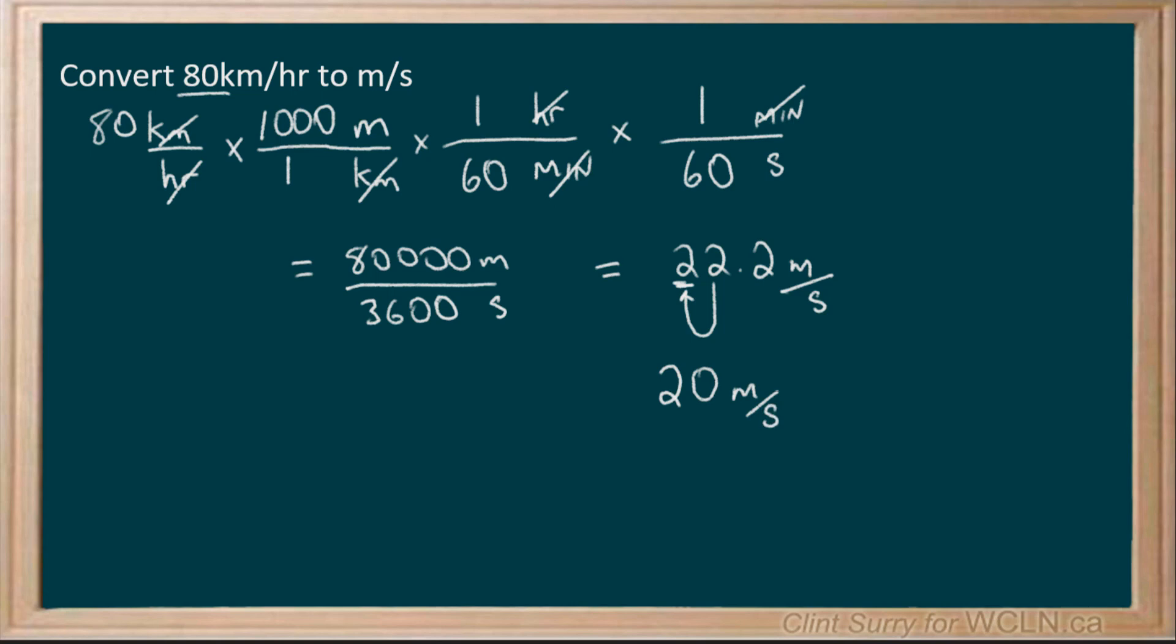If that 80 kilometers an hour happened to be 80 point, then we'd have two sig figs and we could write it as 22. Or if it was 80.0 kilometers per hour, I would use all three sig figs. This is just something to be aware of. Final step is to circle my final answer and there you have it.